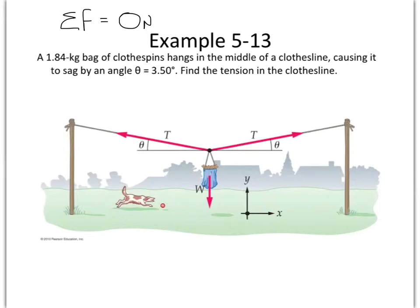So we want to find in this problem the tension in a clothesline. The tension at this angle right here. Now, this clothesline has a bag of clothespins on it that is a certain mass and that mass creates a weight force downwards. Let's go ahead and just label that mg, and while we're at it, why don't we just calculate it?